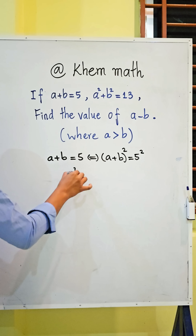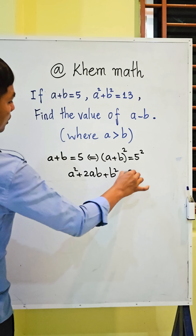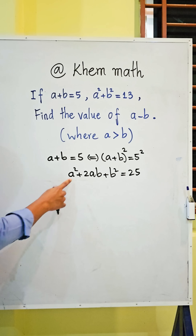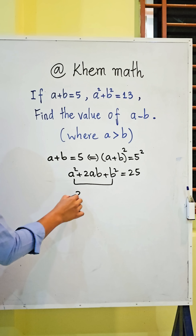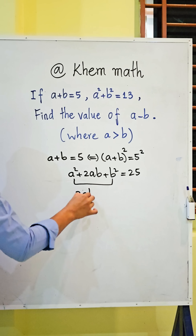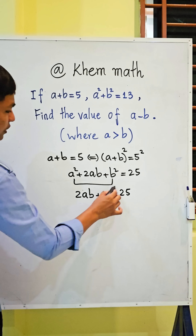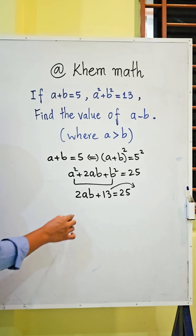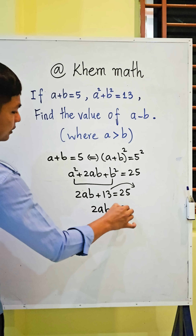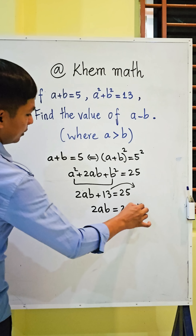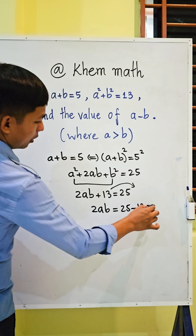We get a squared plus 2ab plus b squared equals 25, and here a squared plus b squared equals 13. We get 2ab plus 13 equals 25, and we move 13 to the right hand side. We get 2ab equals 25 minus 13, which equals 12.